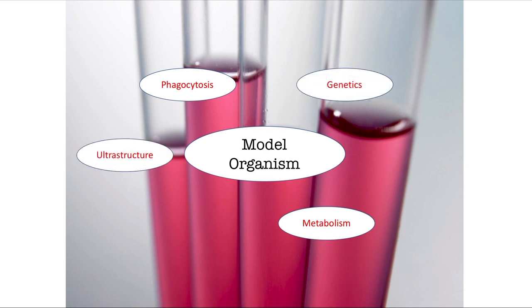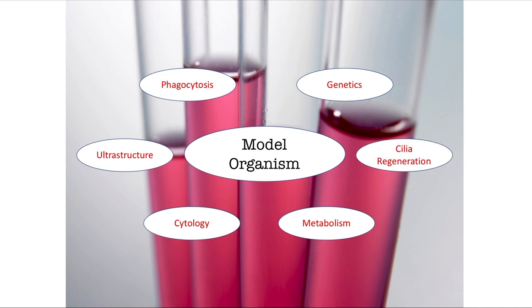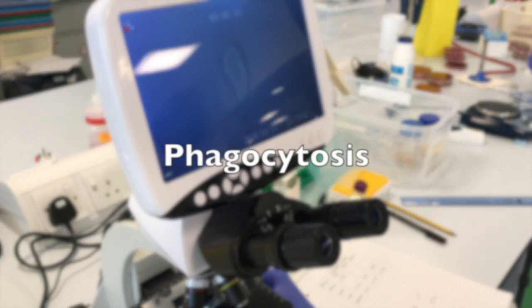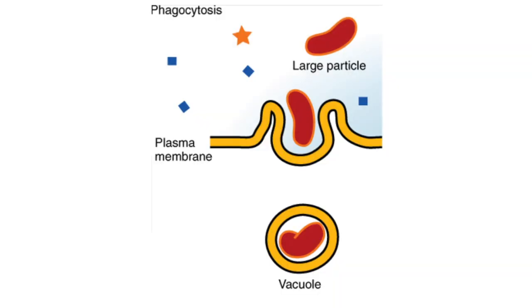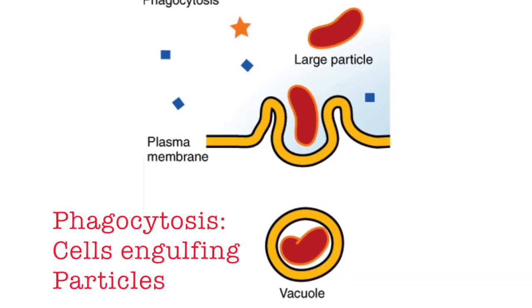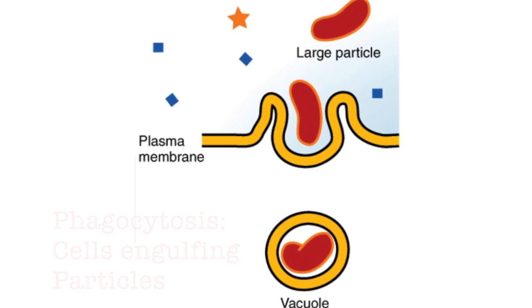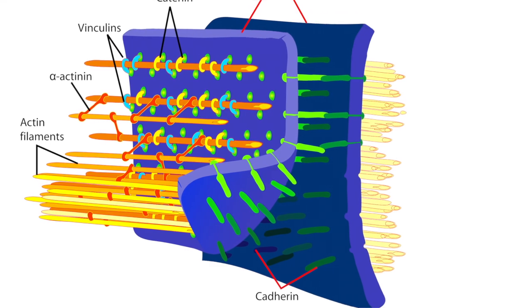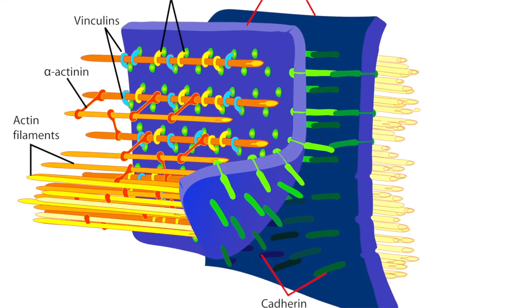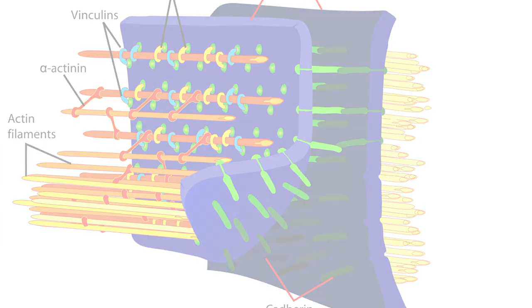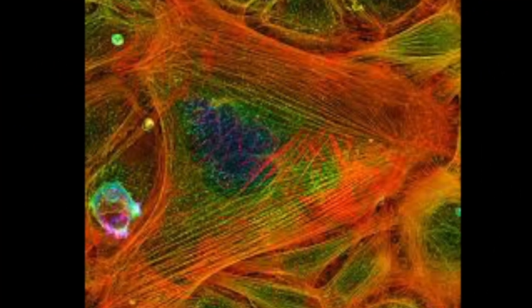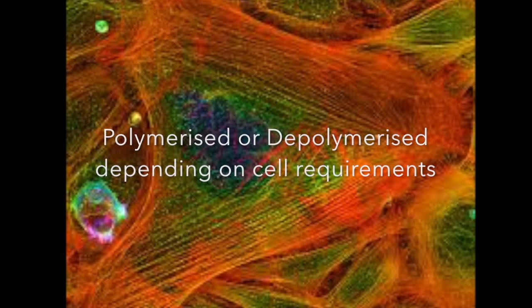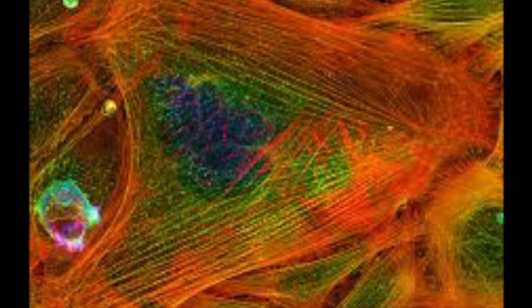This video describes an experiment investigating phagocytosis in Tetrahymena and how the process can be altered by drug intervention. Phagocytosis is the cellular process of engulfing particles. It relies upon the cell's cytoskeleton, which consists of actin filaments, microtubules and intermediate filaments.